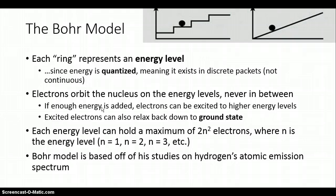The electrons orbit the nucleus on the specific rings. If there's enough energy added from an excitation, electrons can be excited at higher energy levels. Once they relax, it goes back down to its ground state, and the energy that's released is the light that we see.